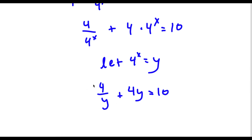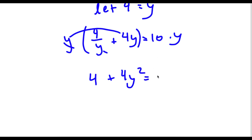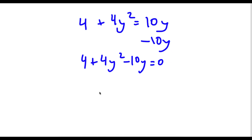Now if I multiply both sides by y, I get 4 plus 4y squared equals 10y. Then subtracting 10y from both sides gives 4 plus 4y squared minus 10y equals 0. Rearranging in order of highest degree gives 4y squared minus 10y plus 4 equals 0.